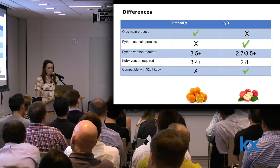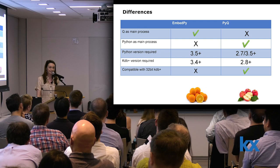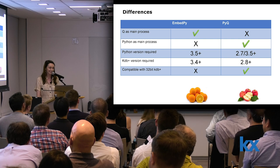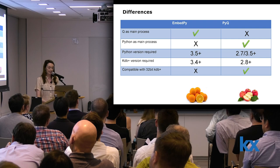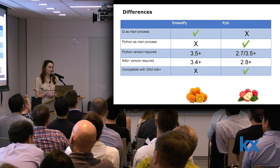The main difference would be your versioning. For all you dinosaurs out there who like to stay on Python 2.7 or 2.8 versions, you can use PyQ. And the KDB version it supports is quite old too. You can use the newer versions with Embedpy. Another thing to highlight would be compatibility with 32 bits — so if you want to use a Raspberry Pi, I would recommend you use PyQ.